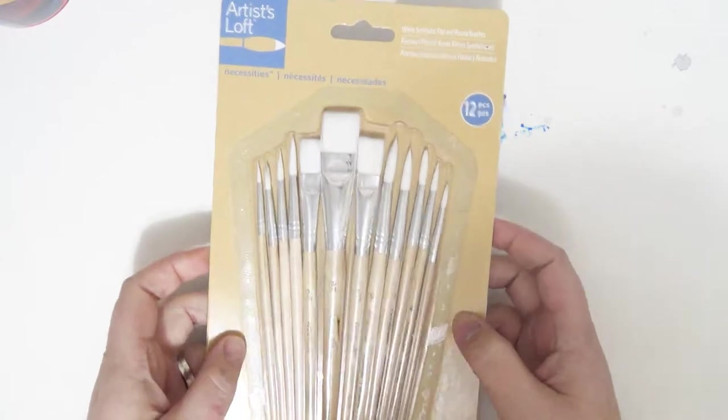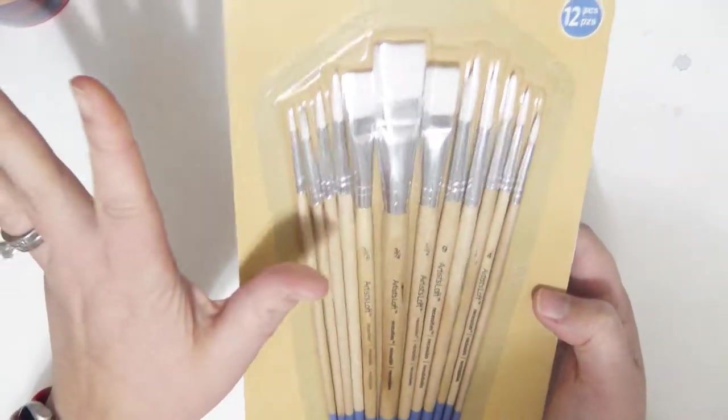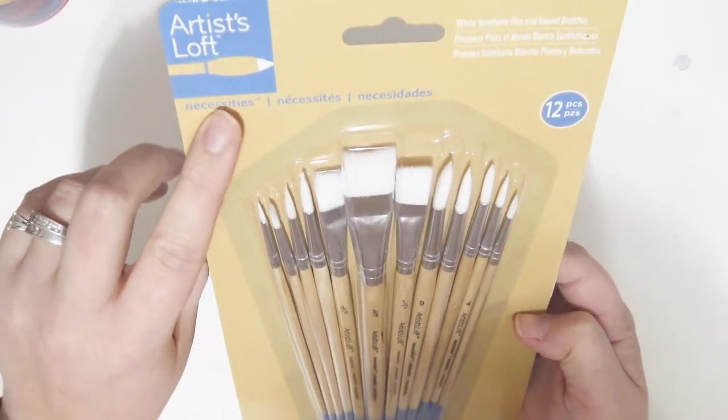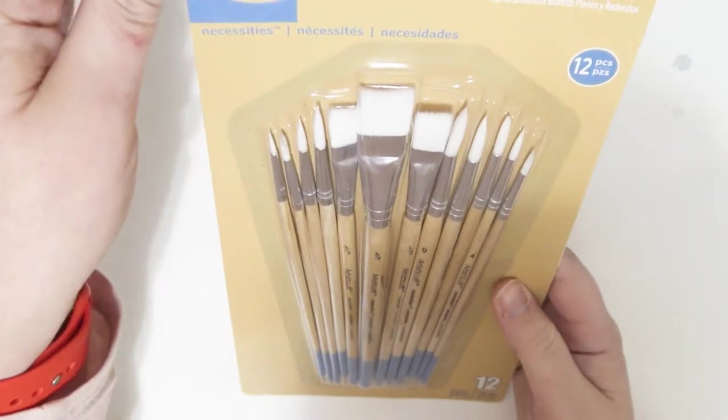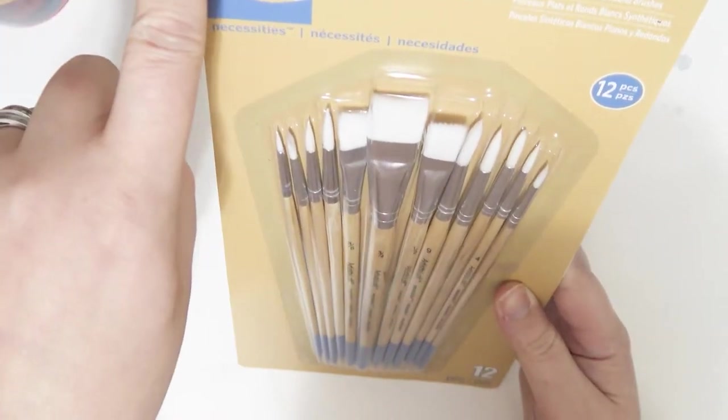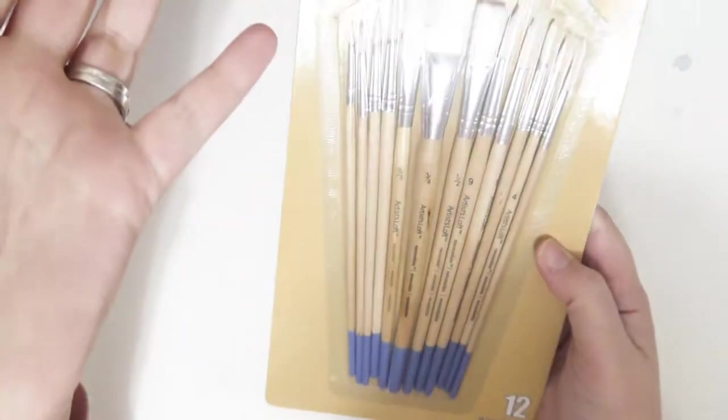Okay, so the first thing I got was this pack of Artist Loft paintbrushes from their Necessities line, I guess. White synthetic flat and round brushes, 12 pieces. I think originally this is $11, like $10.99 or something, they're having a sale.